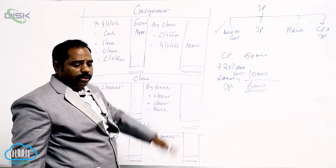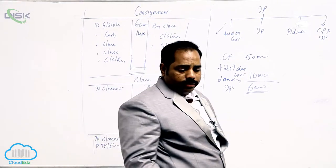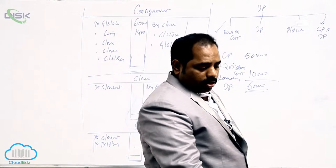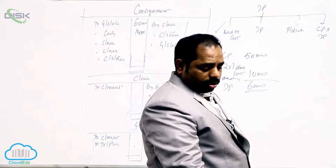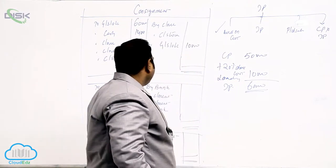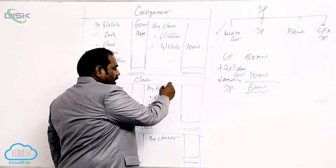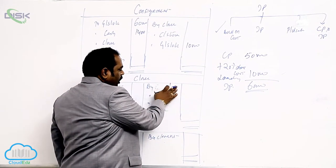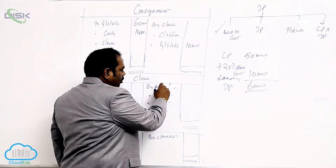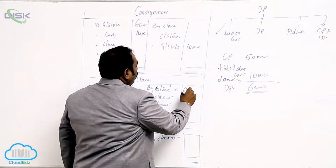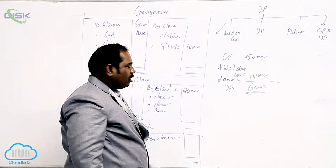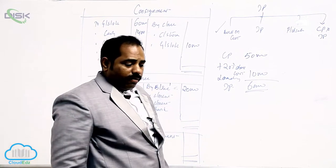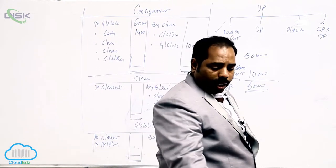Next, Amir drew a bill for rupees 20,000 for two months. Whenever he gives a bill, you may receive the advance either by cheque or by bill. We have received a bill, so it becomes bills receivable. The entry is bills receivable to consignment — whenever we receive a bill, we write bills receivable to consignment.